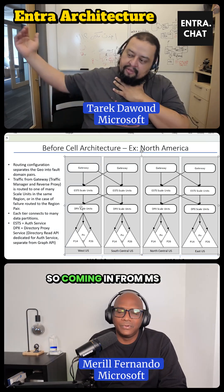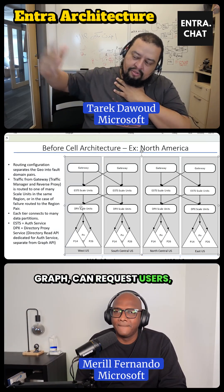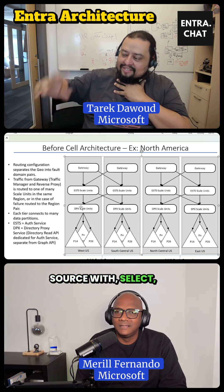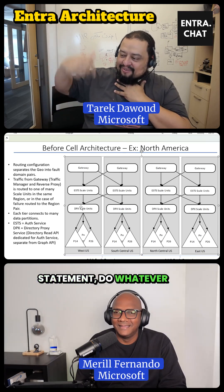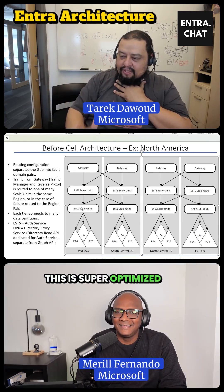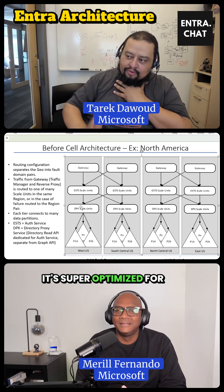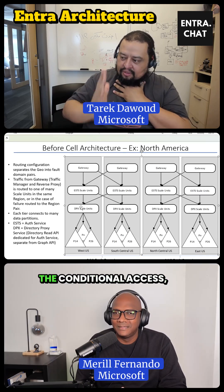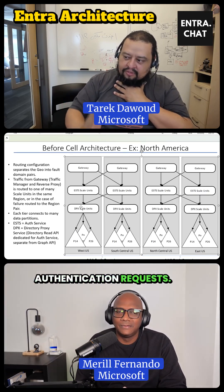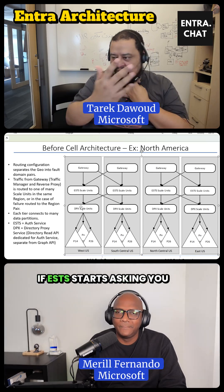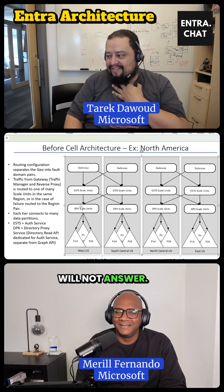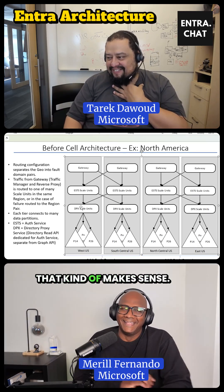Coming in from MS Graph, you can request users, groups, you can filter by source with a select statement, do whatever the hell you want with the directory. This is super optimized for what the ESDS wants — it's super optimized for queries about the user, the conditional access, to get the results of the authentication requests. That's it. If ESDS starts asking about admin units, it will not answer. That kind of makes sense.